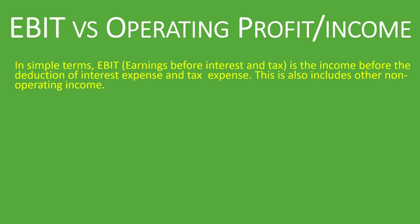In simple terms, EBIT — earnings before interest and tax — is the income before the deduction of interest expense and tax expense, and it also includes other non-operating income. So when you look at earnings before interest and tax, it includes non-operating income if you have any. It's before you deduct the interest expense and the tax expense to arrive at the net profit.